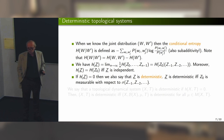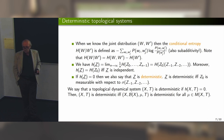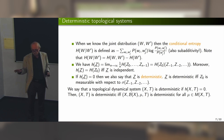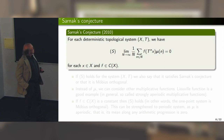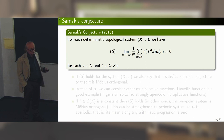A topological dynamical system is deterministic if and only if all stationary processes given by all invariant measures are deterministic. And now, finally, Sarnak's conjecture: if we take a topological dynamical system which is deterministic, we want to show that all continuous observables in the system are orthogonal to the Möbius function.